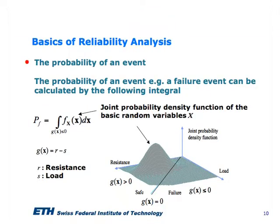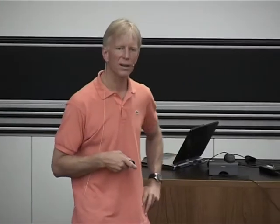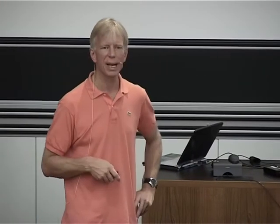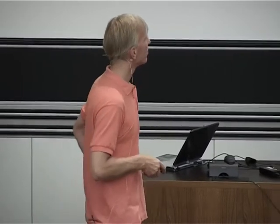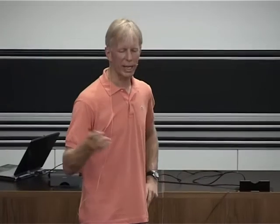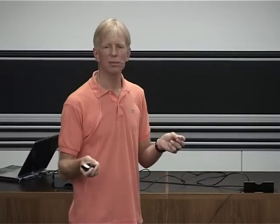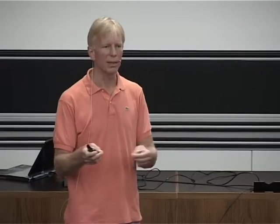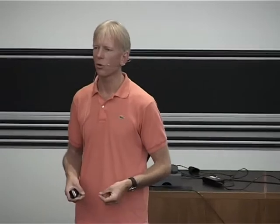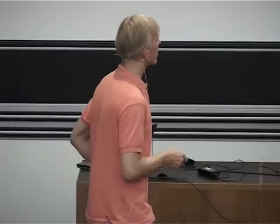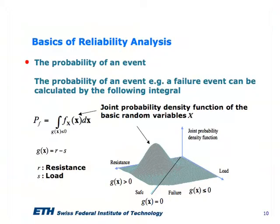If we have a very simple limit state function with two variables r and s, and we assume the event of interest will take place when s is larger than r — meaning the limit state function has a value smaller than or equal to zero — that could be a typical case in structural engineering. If the resistance of a structural component is smaller than the load, then this structural component will fail. Here r and s are assumed to be outcomes of random variables respectively.